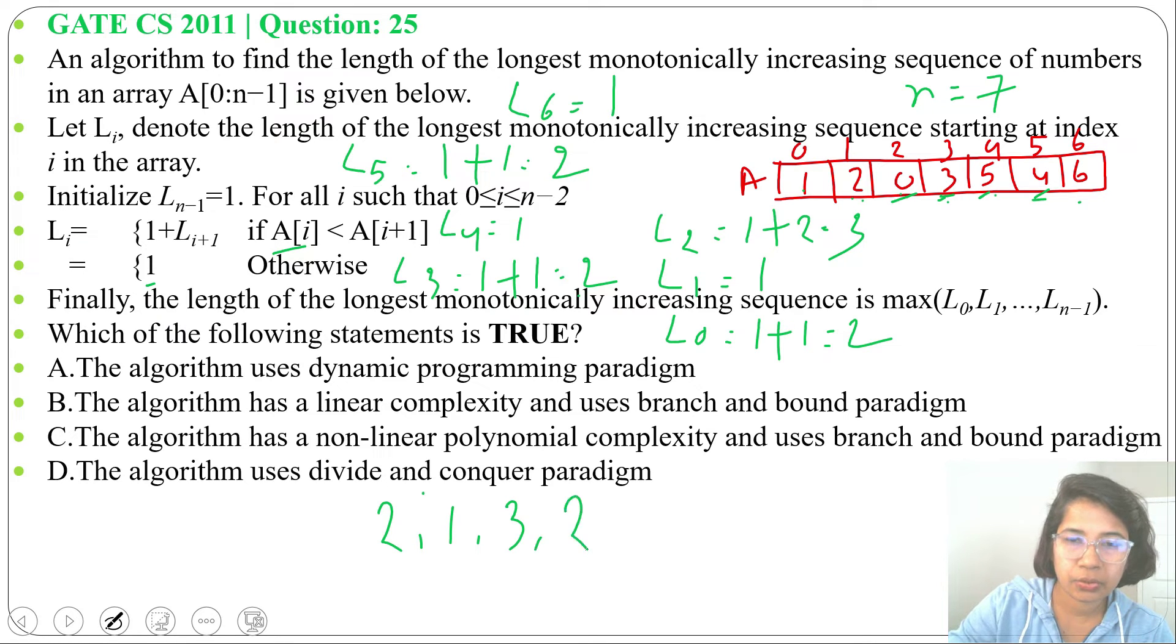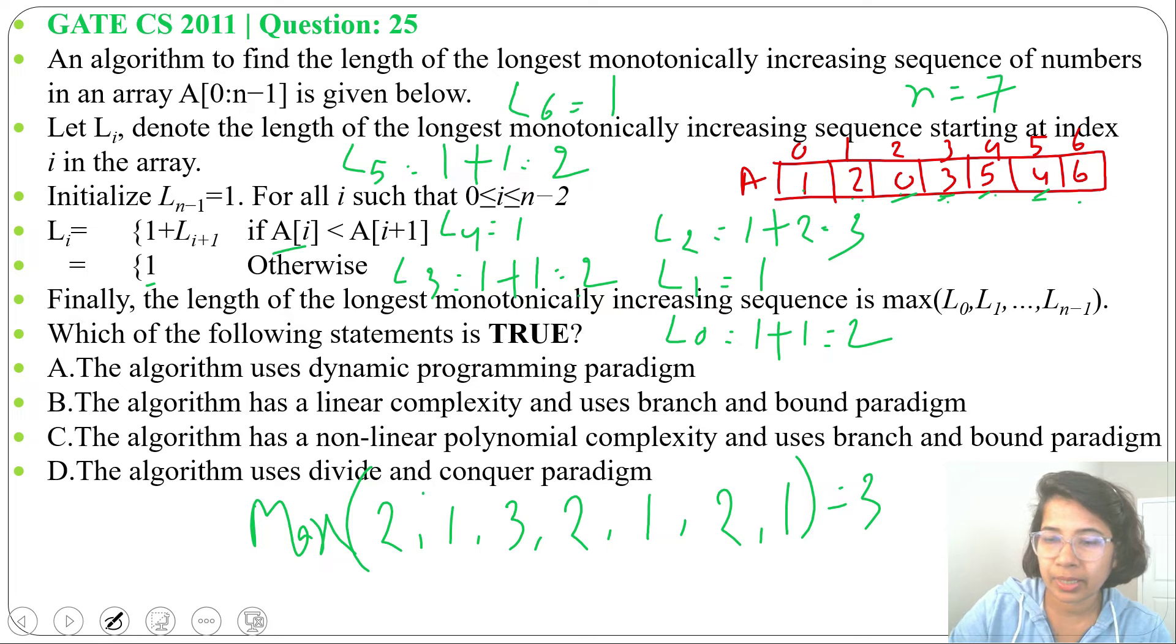So max of all these is 3, so length of longest monotonically increasing sequence is 3. It's 0, 3, 5. So 0, 3, 5 is the longest monotonically increasing sequence in this example.